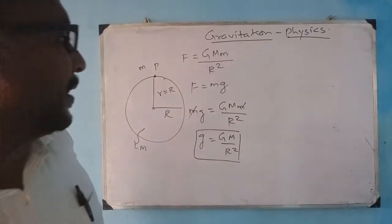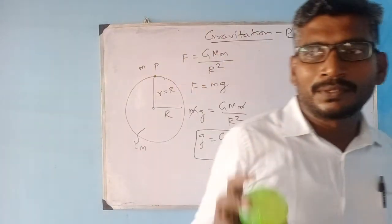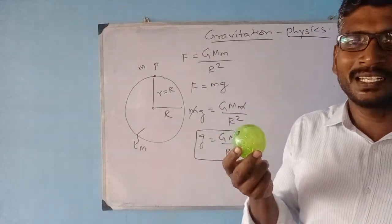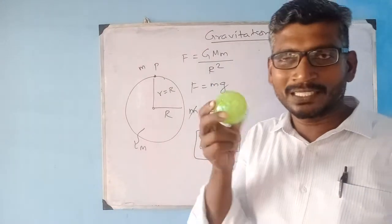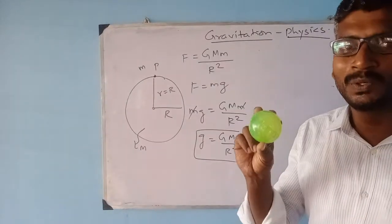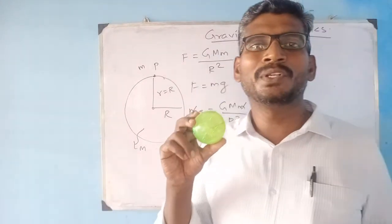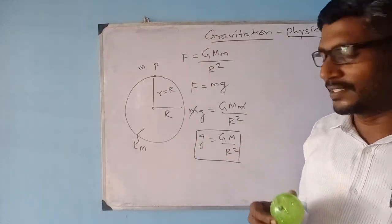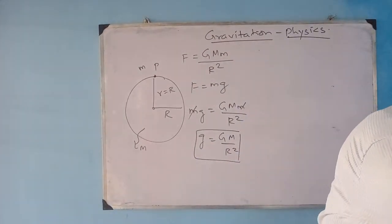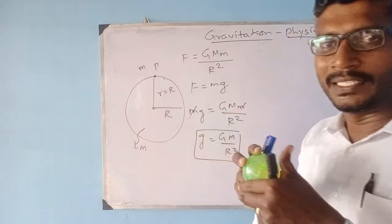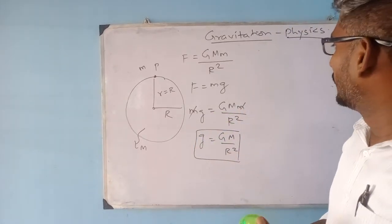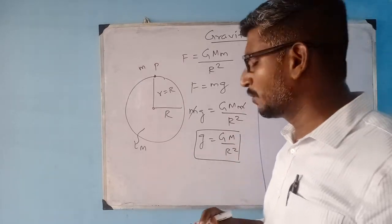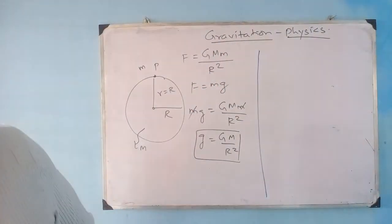Now I want to know — how many of you know exactly what is the mass of the Earth? How many of you know what is the density of the Earth? How many of you know what is the radius of the Earth? It is easy to calculate from these things. So now I want to understand about this Earth. From the given relation, I can work out to find out the mass of the Earth.